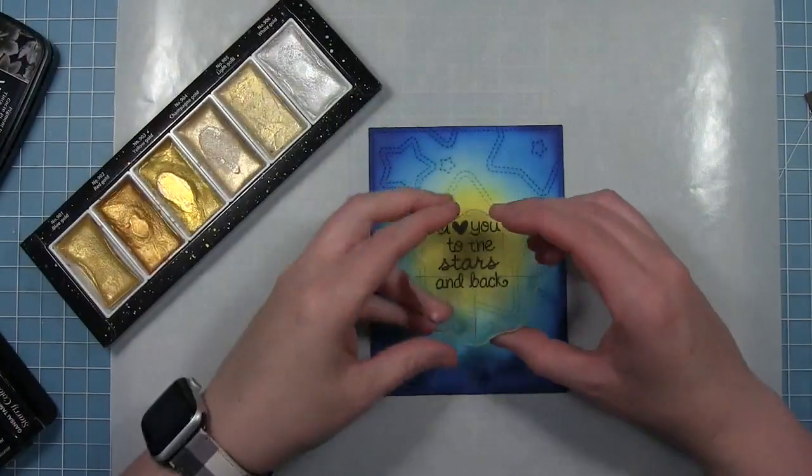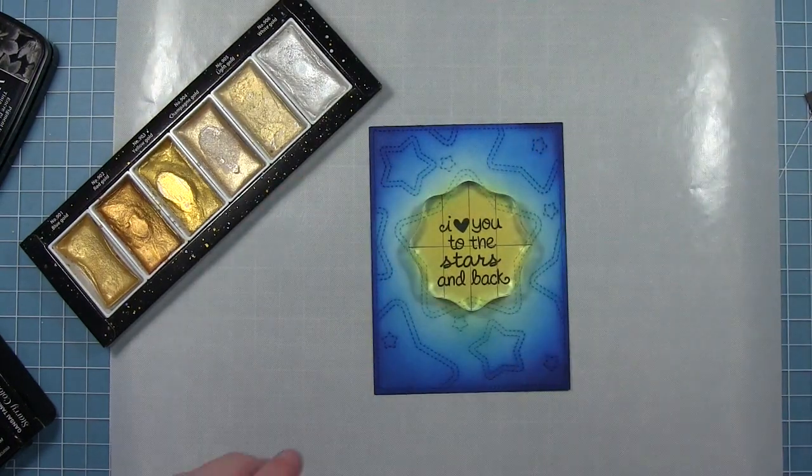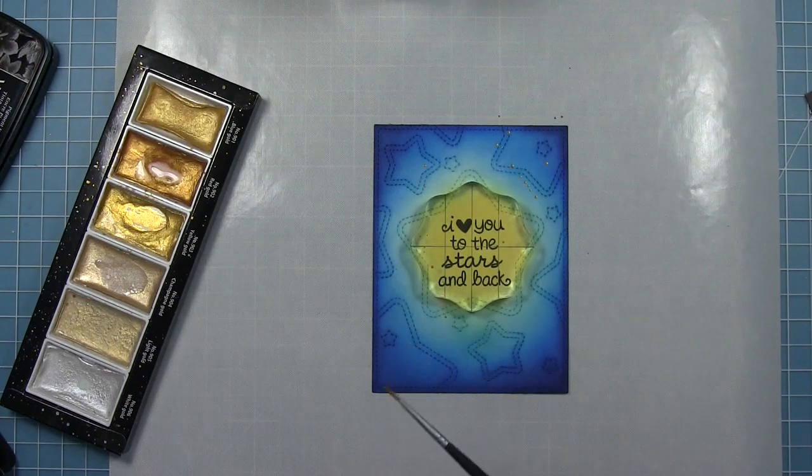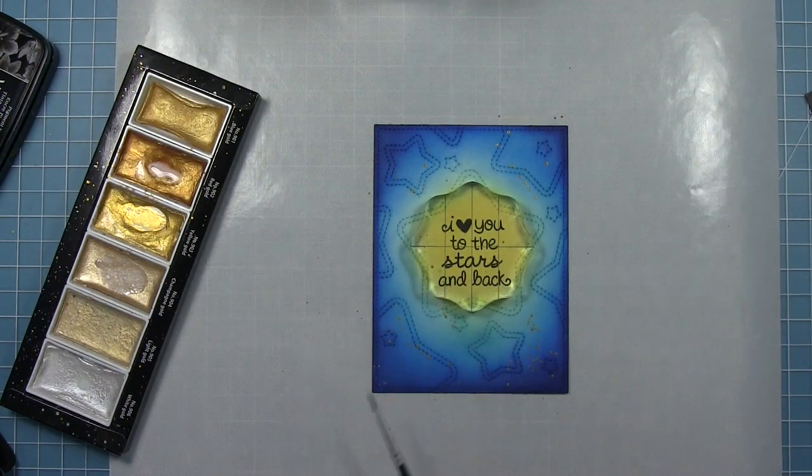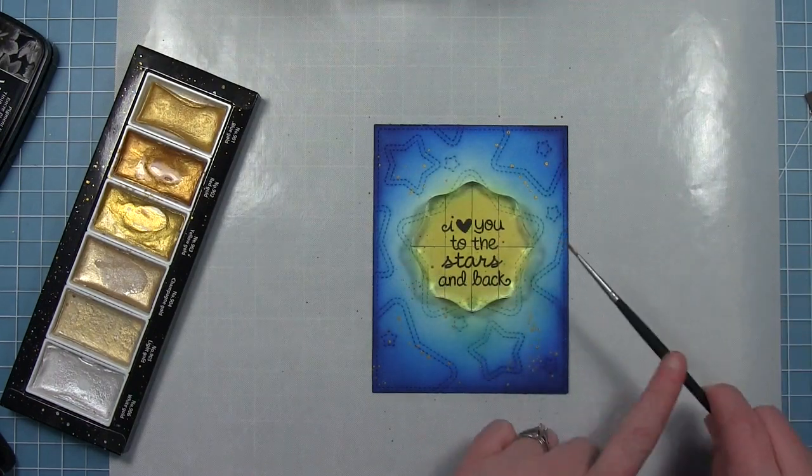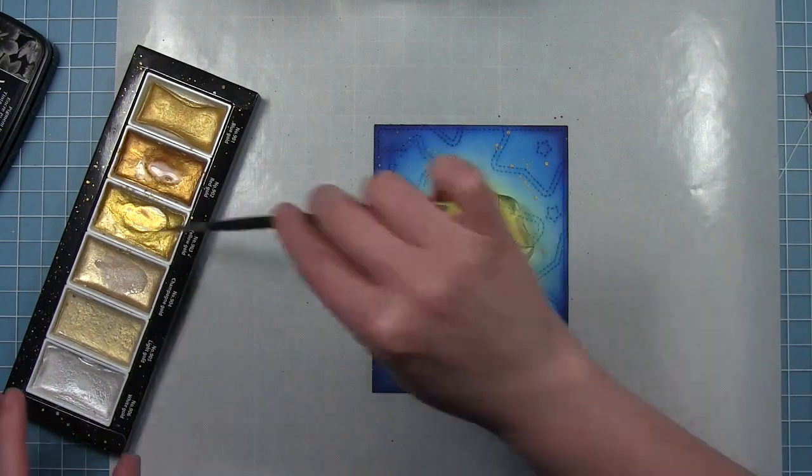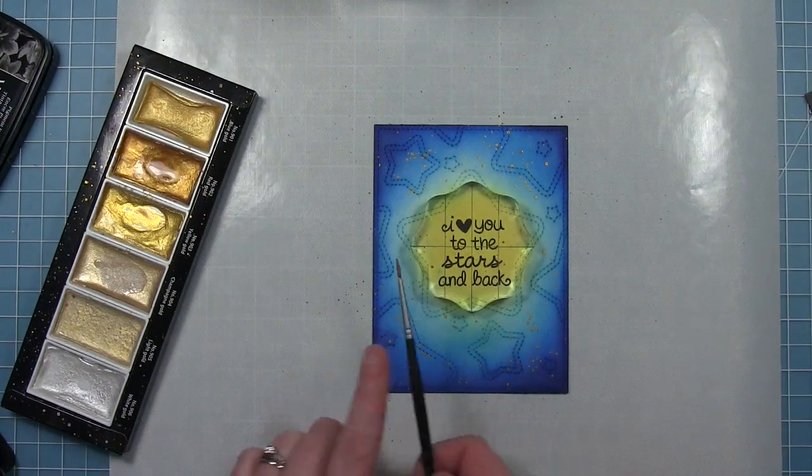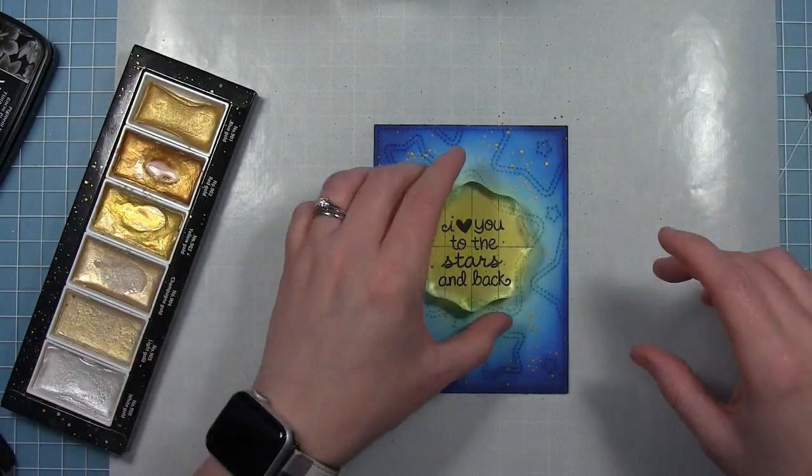And then I also decided I was going to add some gold flecks to this to give that shimmer of a starry sky. But I took my block and I laid it back over my sentiment so that the speckles did not get on my sentiment and it was nice and clean in the middle where my glow is and all those gold flecks were out on the outskirts in that dark blue.